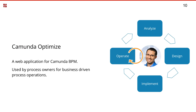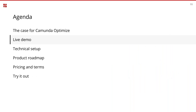In a nutshell, Optimize is a web application specifically designed to be used with Camunda BPM. Assuming that Richard has implemented process improvement via process automation with Camunda BPM, we can use Optimize for getting real business-driven process operation — really putting Richard in the driver's seat and looking at processes in production from his point of view. That's the core idea behind Optimize.